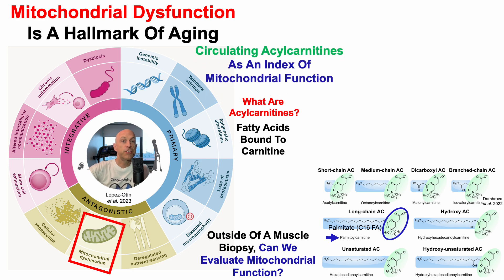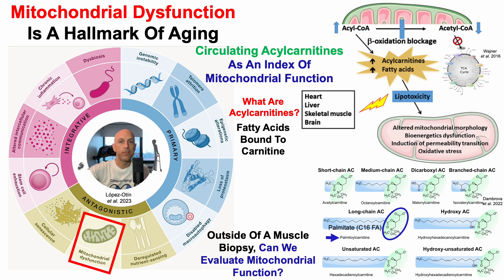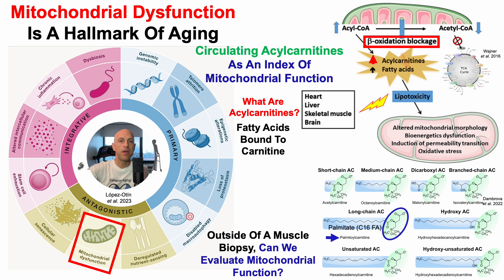I mentioned circulating levels of acylcarnitines can be used as an index of mitochondrial function. So why is that? Within the mitochondria, if there is a blockage to beta oxidation, that leads to an accumulation of acylcarnitines, but also fatty acids, which together contribute to lipotoxicity in tissues such as the heart, liver, skeletal muscle, and brain.